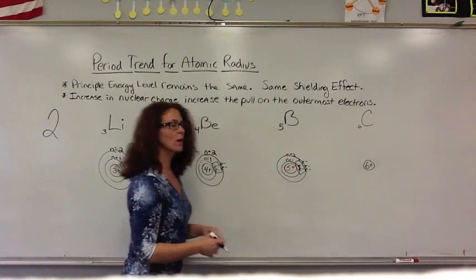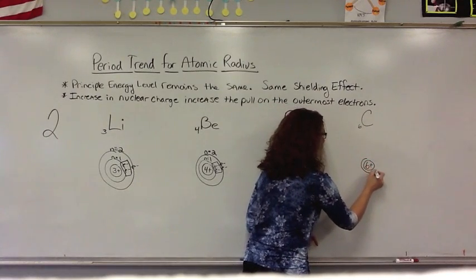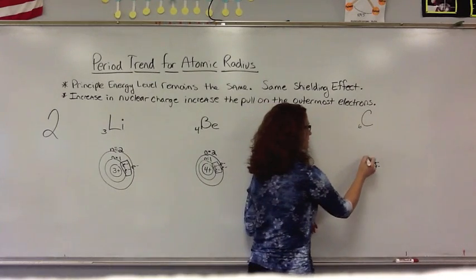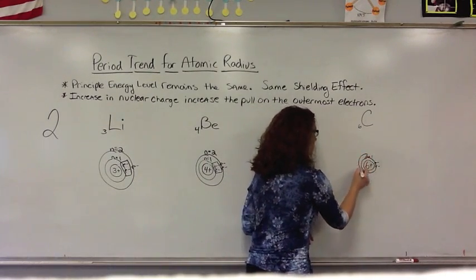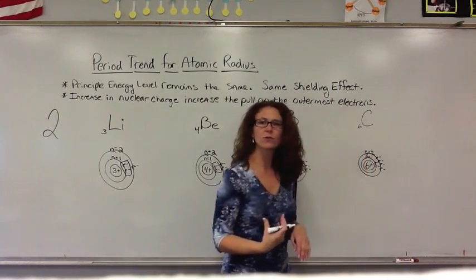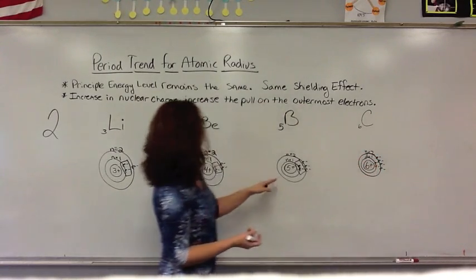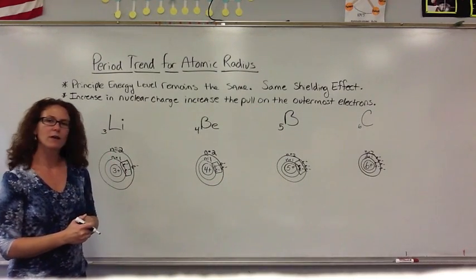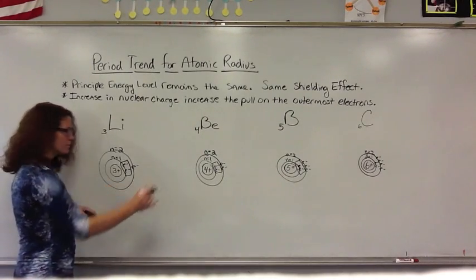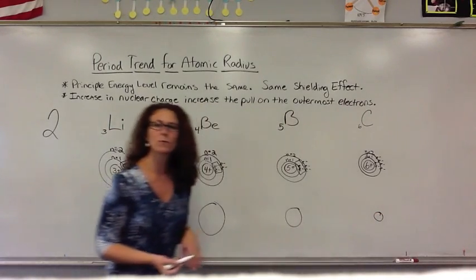Carbon has six protons in the nucleus. The first two electrons are really held close and tight to the nucleus on the first energy level. Now we have four electrons on the n equals 2 energy level. That boundary is still going to be held in even closer to the nucleus than Boron, Beryllium, or Lithium because of that six positive charge in the nucleus. So as you go across the period, the atoms generally get smaller and smaller.